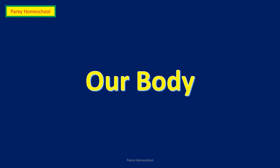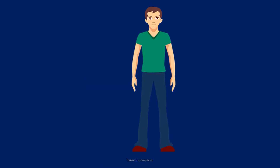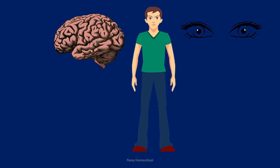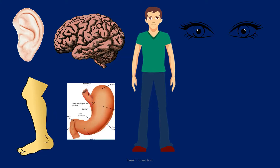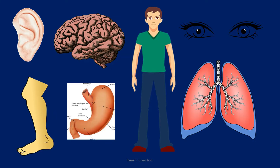Hello everybody, today we will be learning about internal and external parts of our body. So let's start. Our body is made up of different parts and these parts work together to keep us fit and healthy. We can see some parts of our body while some parts we cannot see, and based on this we can classify our body parts into two types.